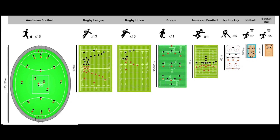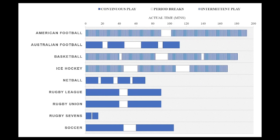Peak speed or maximum velocity is seen as an important metric for both performance and injury risk. It has been described as a 'vaccine' for hamstring injuries in field-based sports with bigger dimensions and more sprinting involved. However, it warrants critical consideration whether court-based sports such as basketball and netball should focus quite as much on tracking maximum speed.